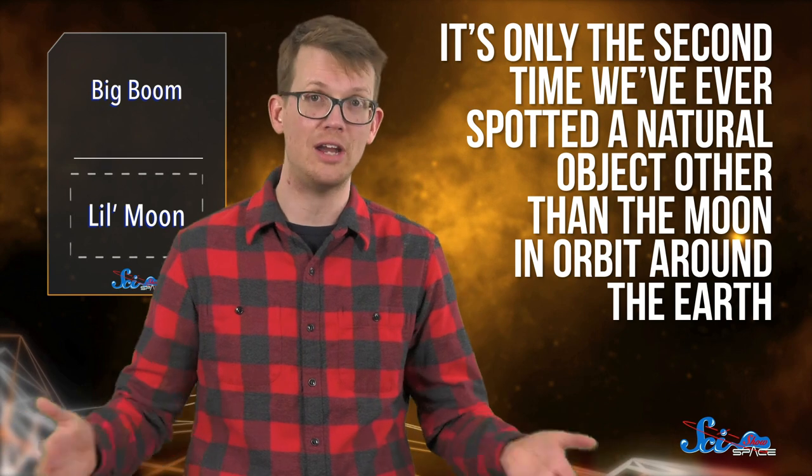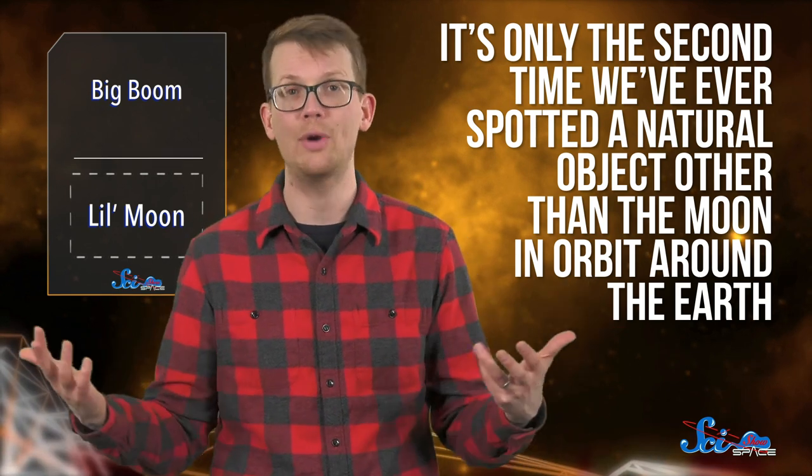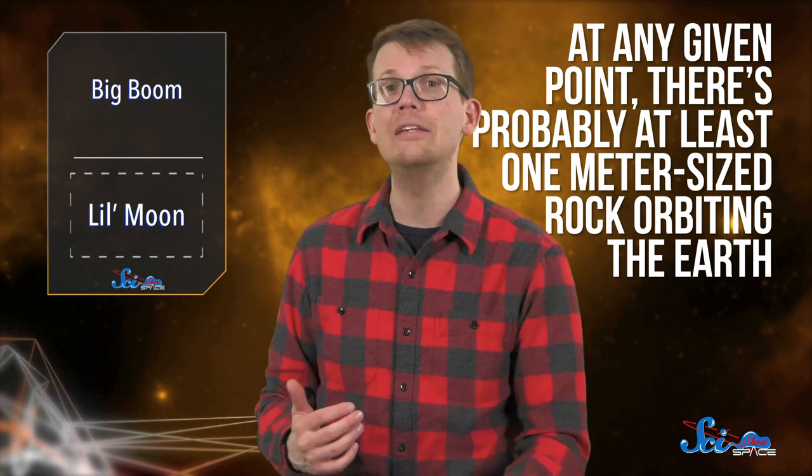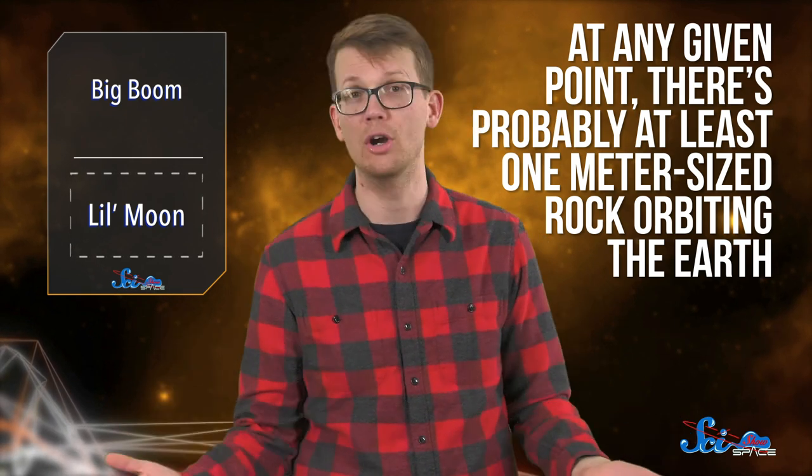And this is pretty exciting! It's only the second time we've ever spotted a natural object other than the moon in orbit around Earth. But scientists have pointed out that this isn't exactly a super-rare phenomenon. Since everything in the solar system is constantly in motion, planets capture small objects all the time. Astronomers estimate that, at any given point, there's probably at least one meter-sized rock orbiting the Earth.